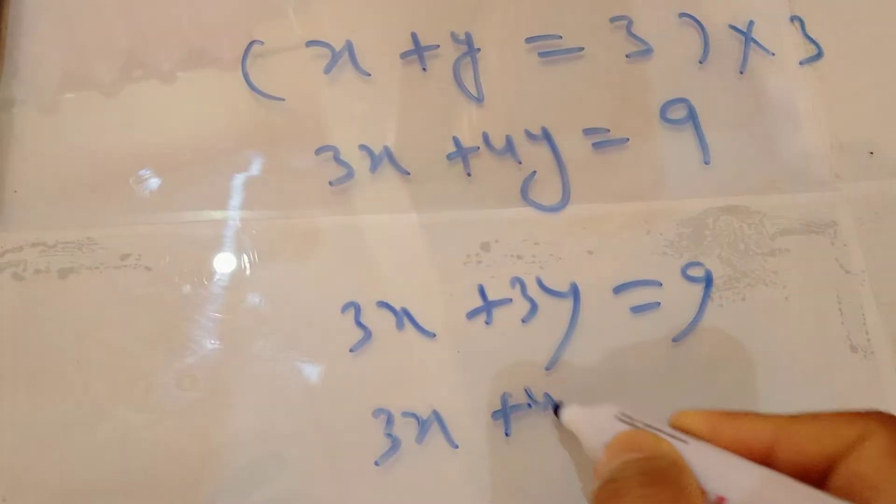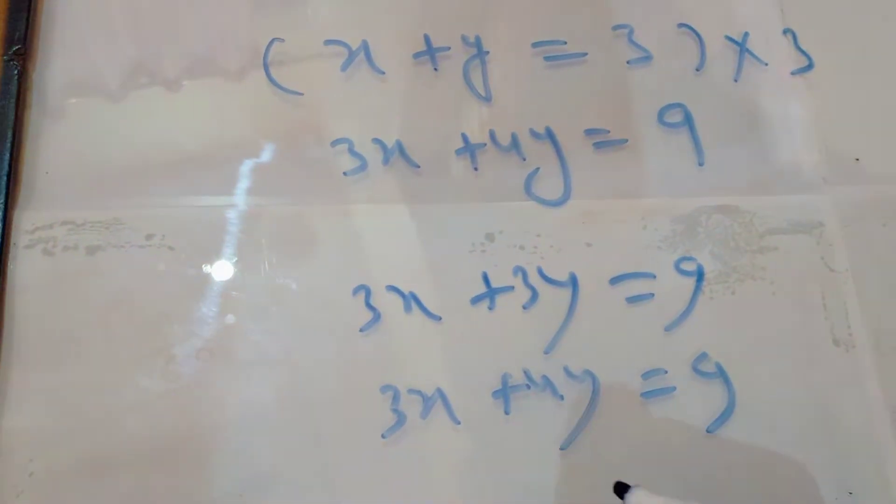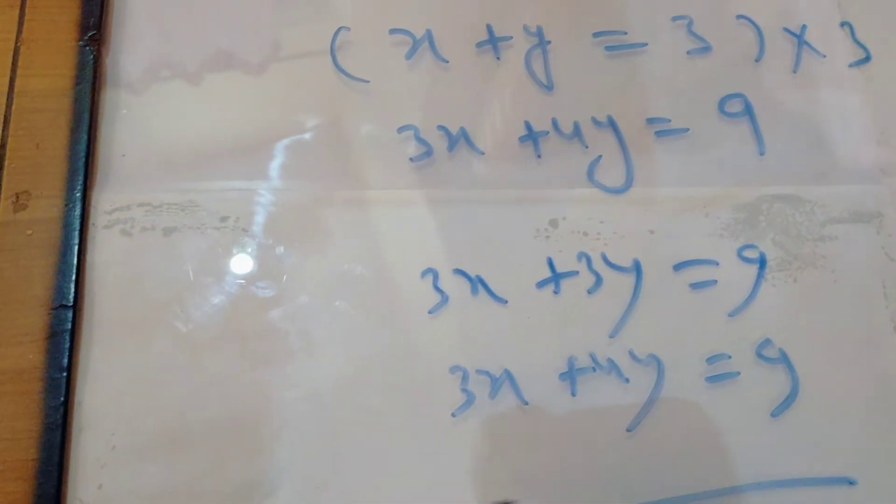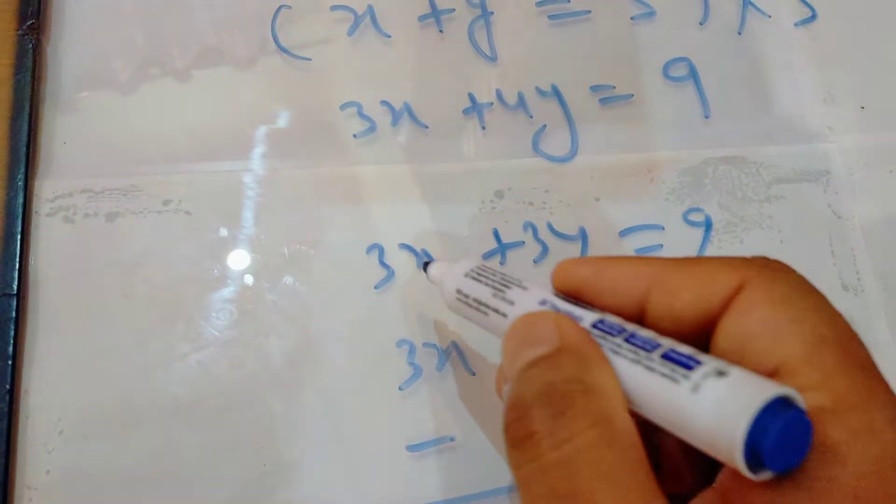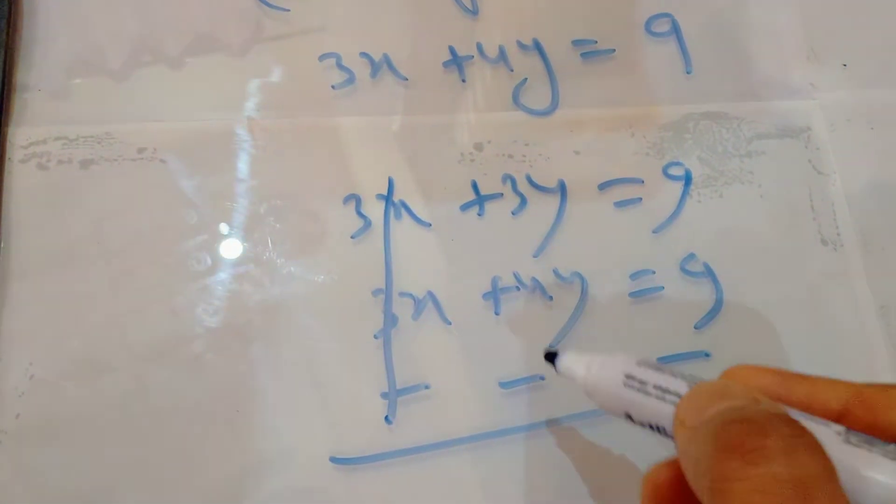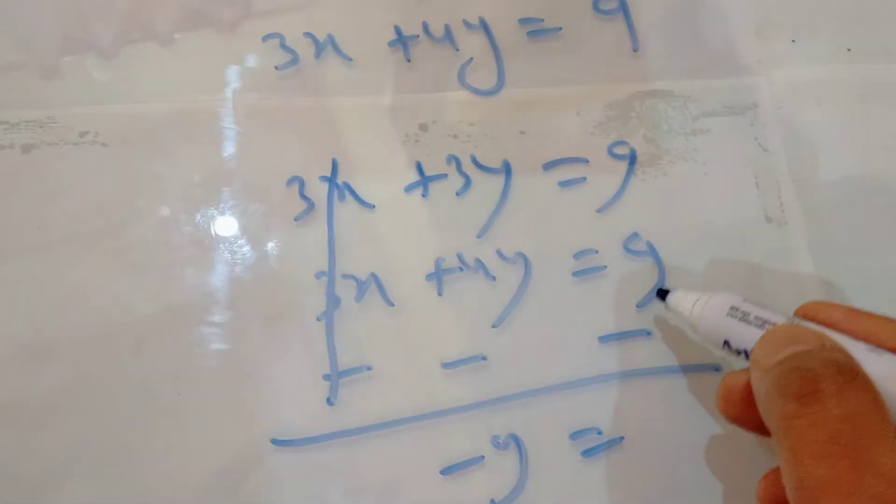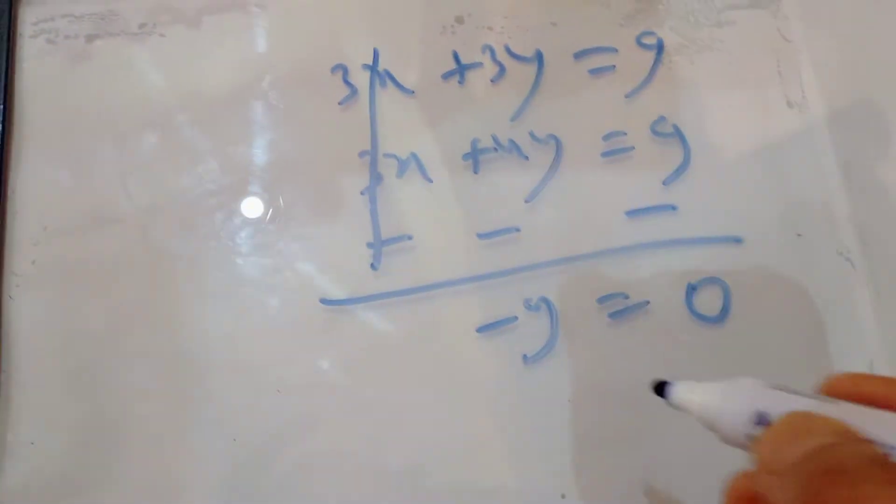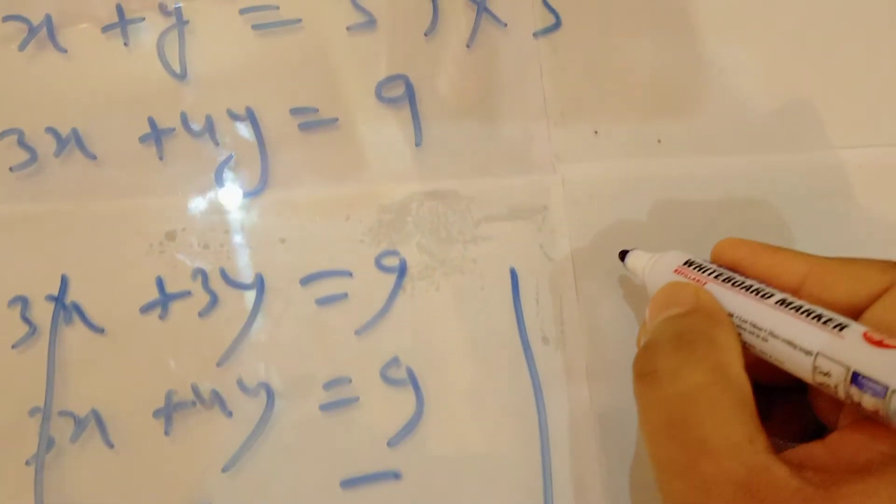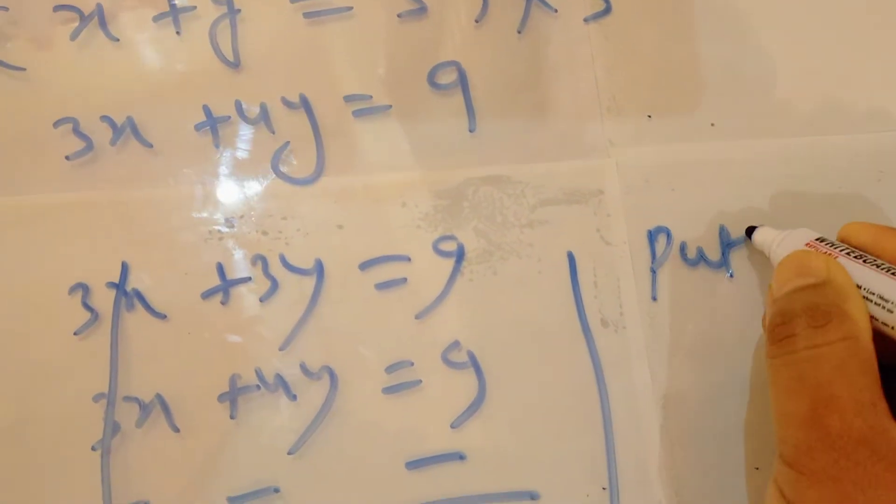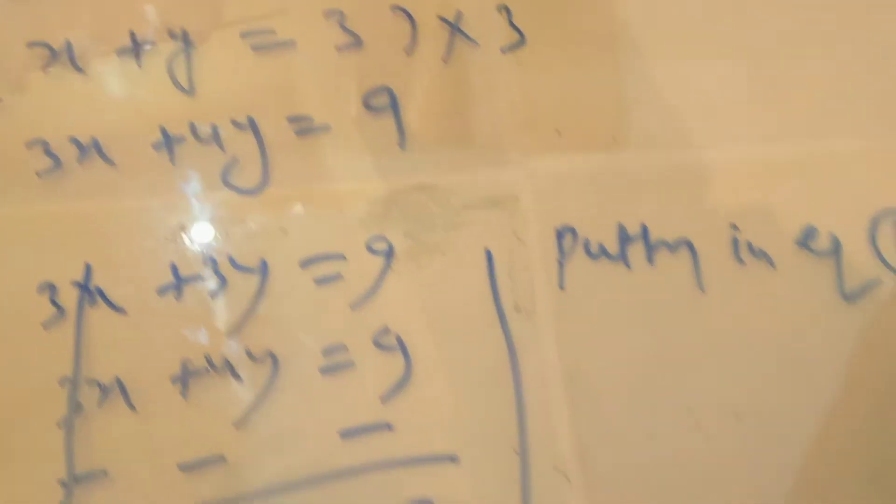So here it is minus. Now with the sign change, cancel it out. Here 4y minus 3y gives minus y equals 9 minus 9, which is 0. Therefore y equals 0. Now in the second step, putting in equation number 1 this value which you have calculated...